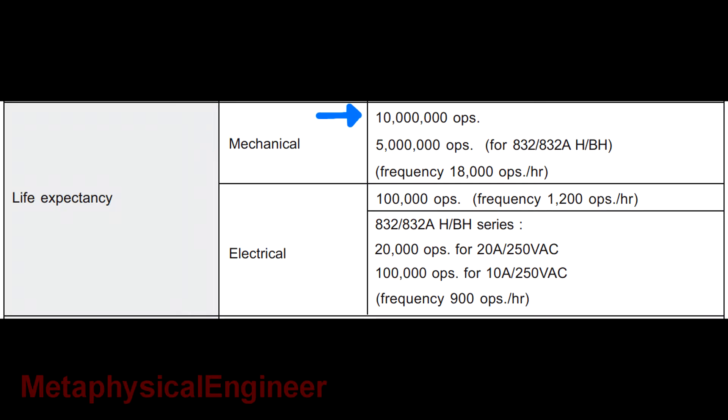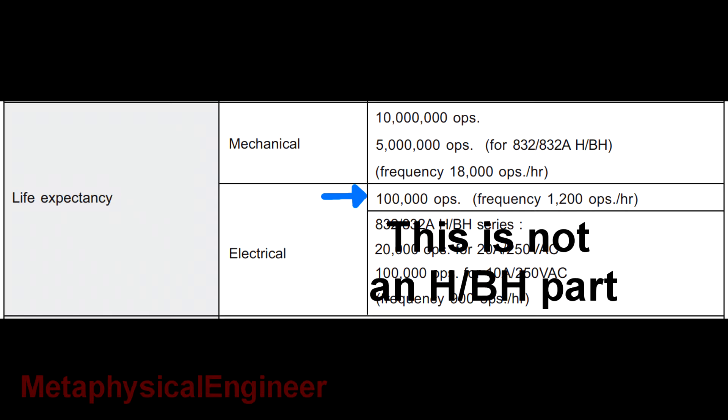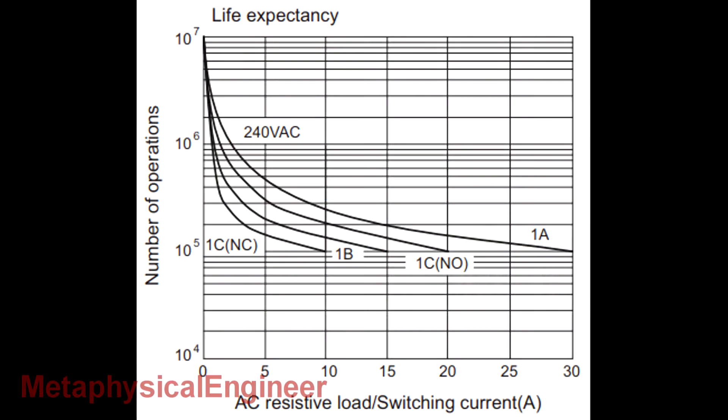Mechanical lifespan is easy to reach absurd numbers with modern materials. Contact electrical lifespan is a limiting factor. Here it claims 100,000 cycles at what I assume is 20 amps resistive load, 250 volts AC. The lifespan chart is a little bit more optimistic, with 150,000 operations at those conditions.